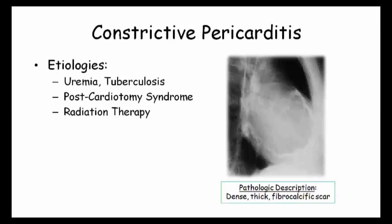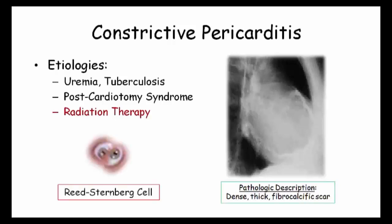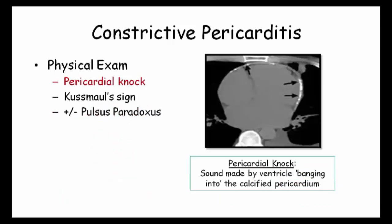You've identified the patient as having constrictive pericarditis — you need an etiology. Whereas uremia, TB, and postcardiotomy syndrome are probably most common, they do love the patient with Hodgkin lymphoma who received mantle irradiation 30 years earlier. Be familiar with the pathologic description of the pericardium as consisting of dense or thick fibrocalcific scar. On physical exam, a pericardial knock may be given — note this is a sound, not a murmur, and it represents the ventricle banging into the calcified pericardium.